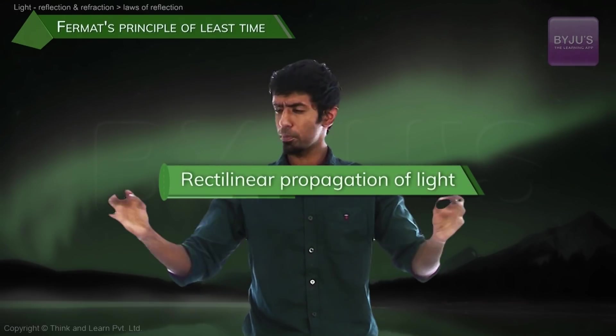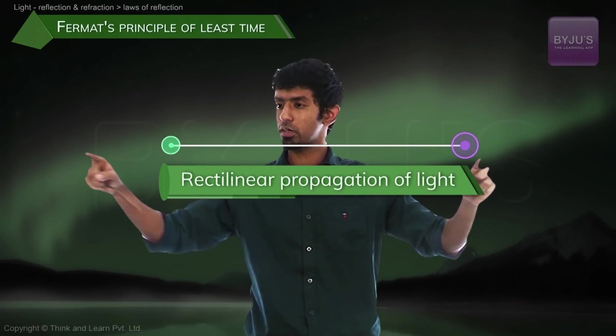Right in your 7th standard and 8th standard, what did you learn? They told us that light is a ray and they told us something - rectilinear propagation of light. And what is that? Light will always travel in a straight line.